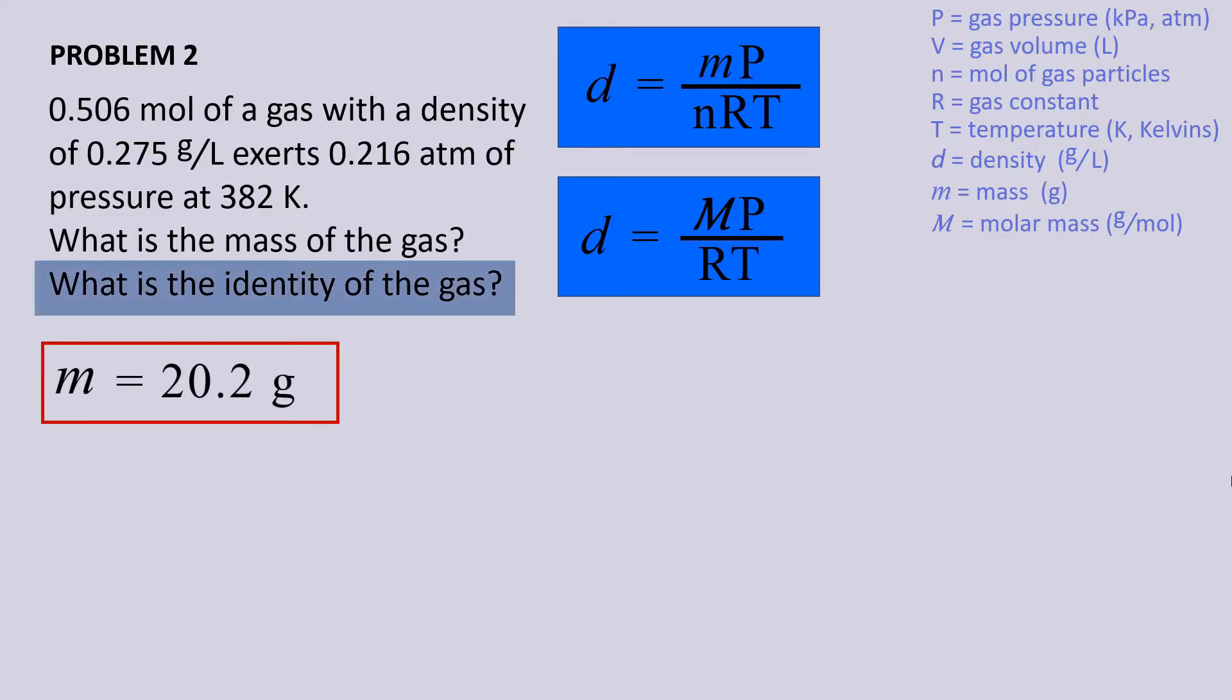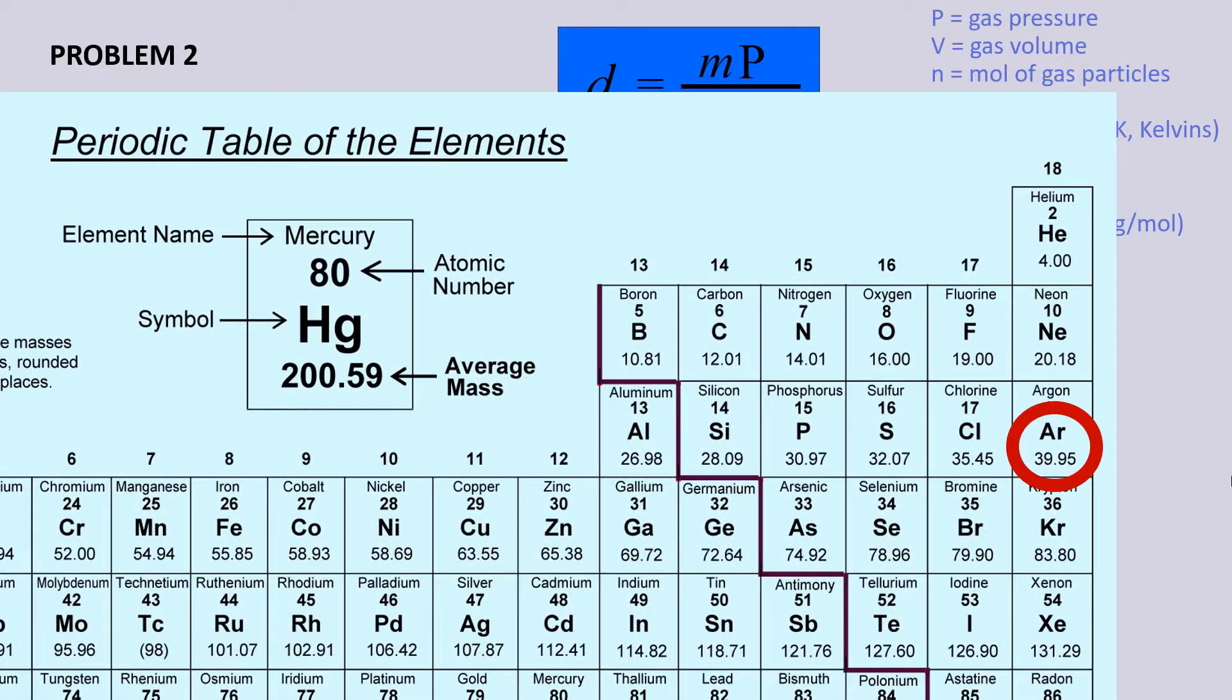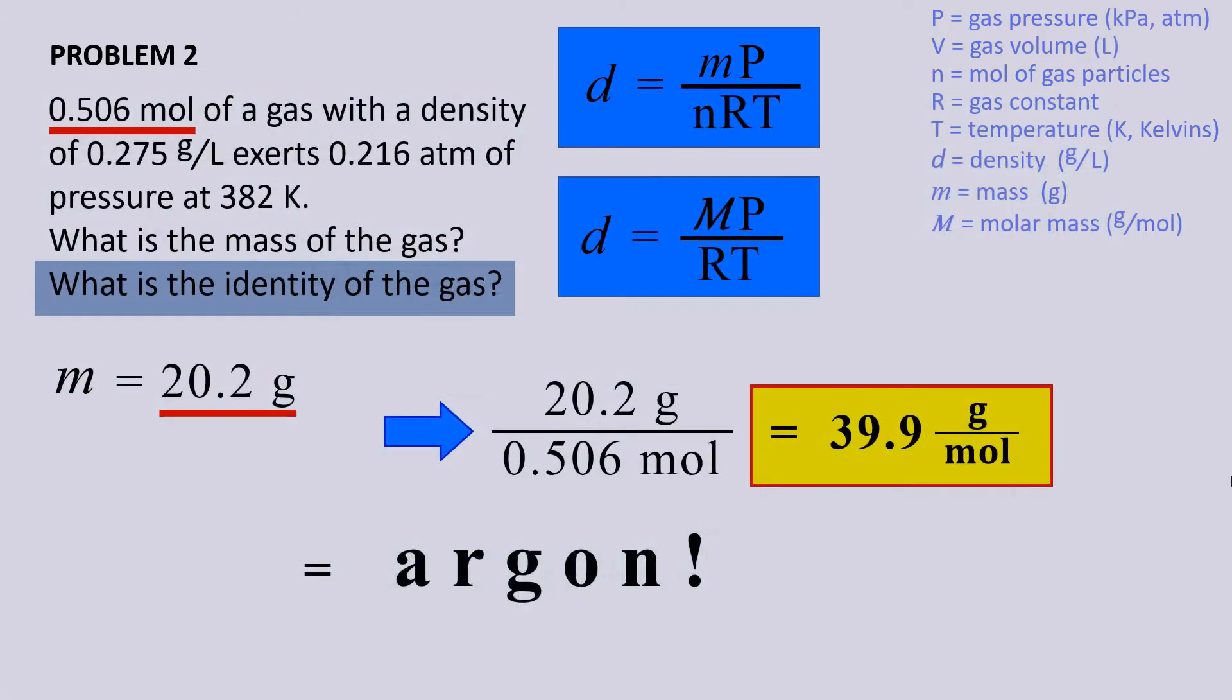The second question asks what gas this is. Well, we have mass and we have moles. If we divide the two, that gives us the molar mass of the gas. Let's look on the periodic table, and we see that argon matches our calculated molar mass, and so it seems this is argon.